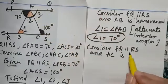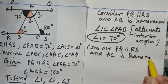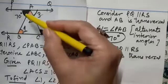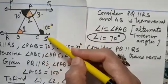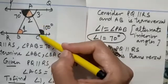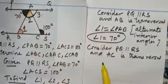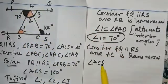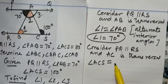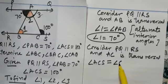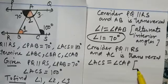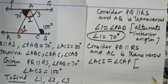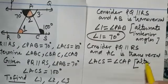AC is transversal. Can you tell me a relationship between angle ACS and angle CAP? Very good. Angle ACS will be equal to angle CAP. Very good. Angle ACS will be equal to angle CAP because again you see that they are making alternate interior angles.